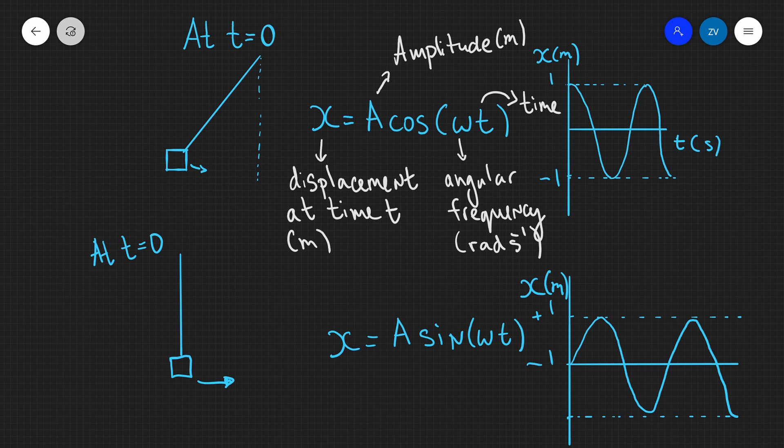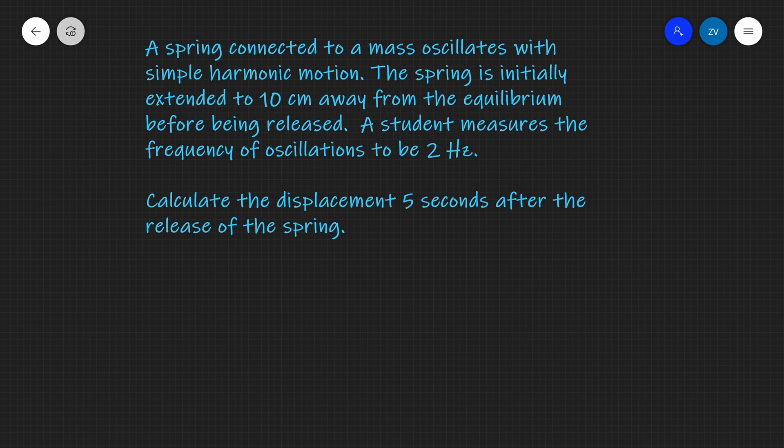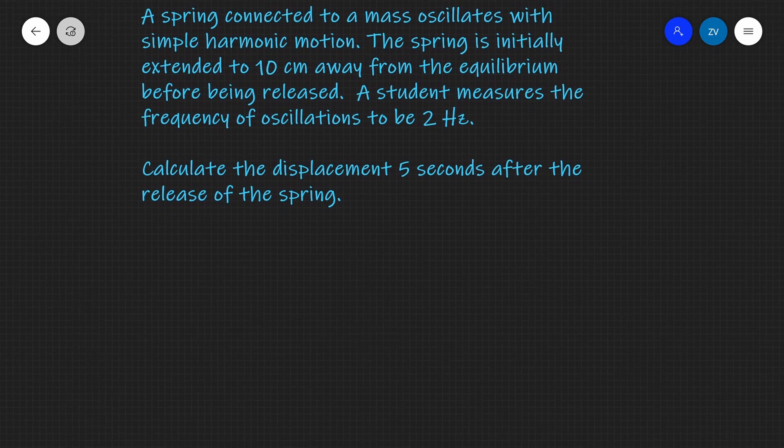Now let's have a look at an example question. We have a spring connected to a mass which oscillates with simple harmonic motion. The spring is initially extended 10 centimeters away from the equilibrium before being released. The student measures the frequency of oscillations to be 2 hertz. Calculate the displacement 5 seconds after the release of the spring.